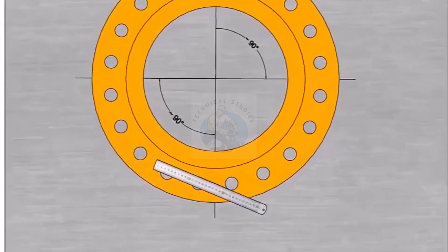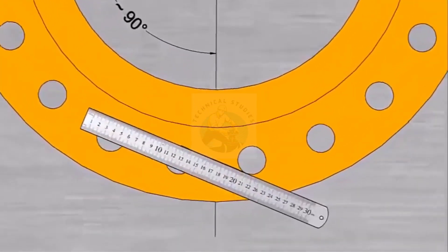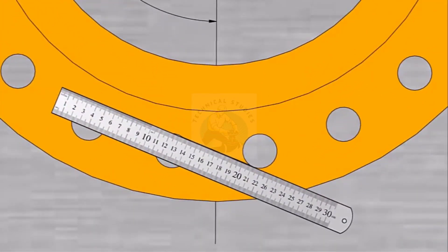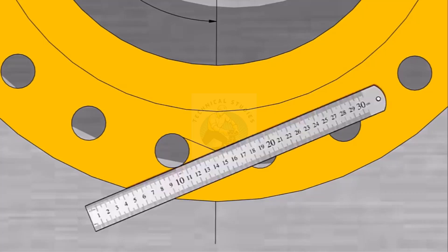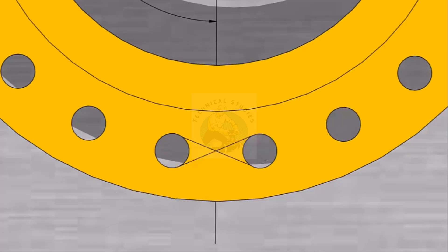Mark the center of any adjacent two holes, drawing tangential lines as shown. Mark the center of the two holes opposite on the other side.